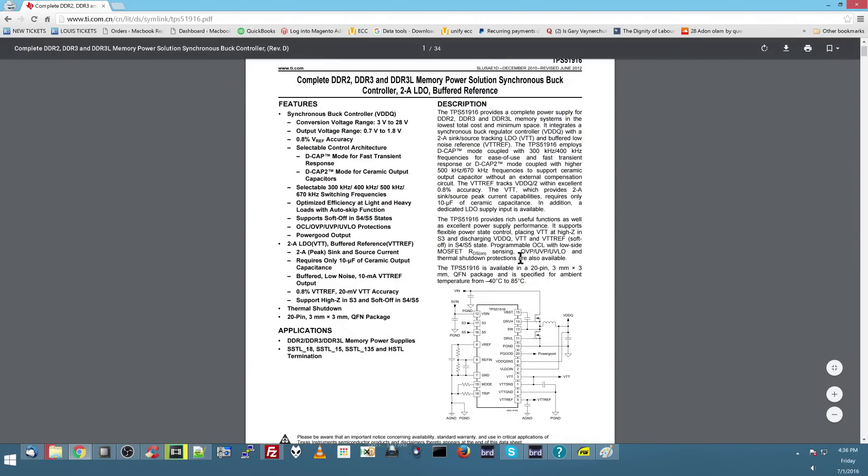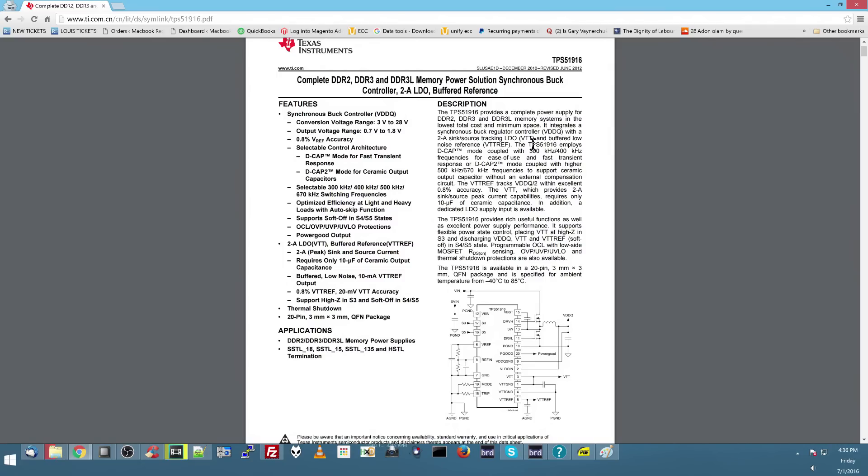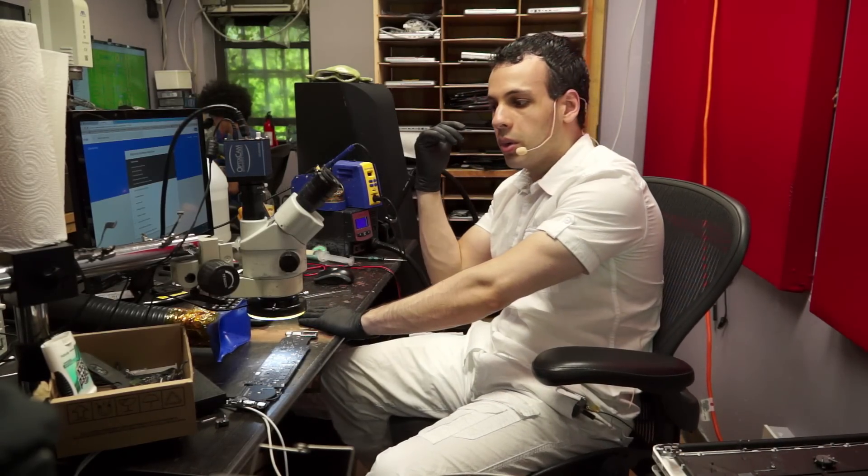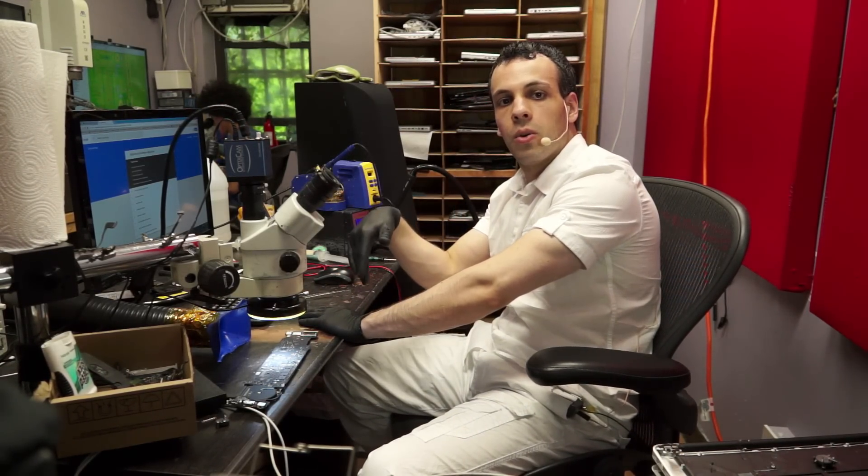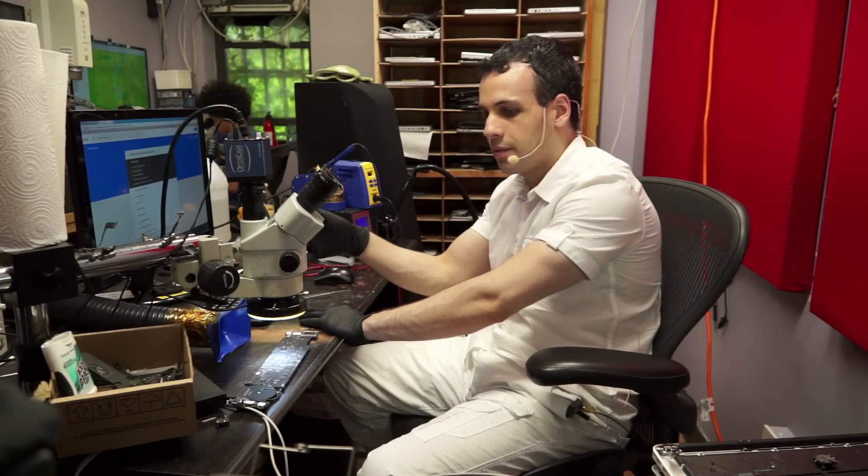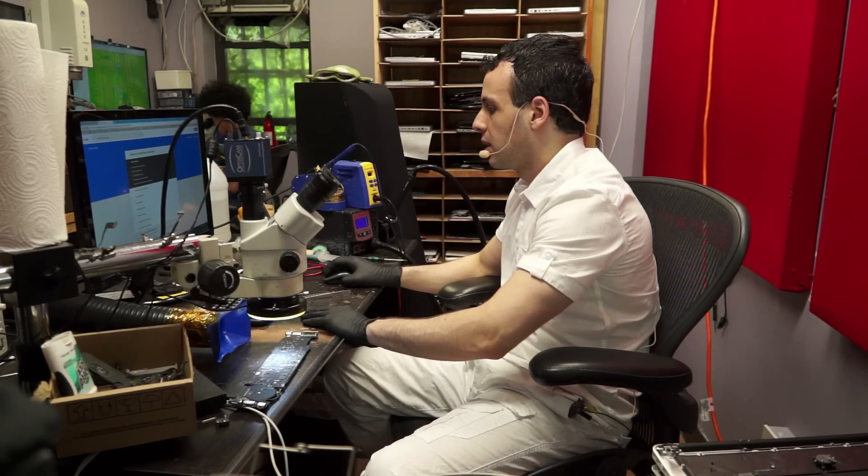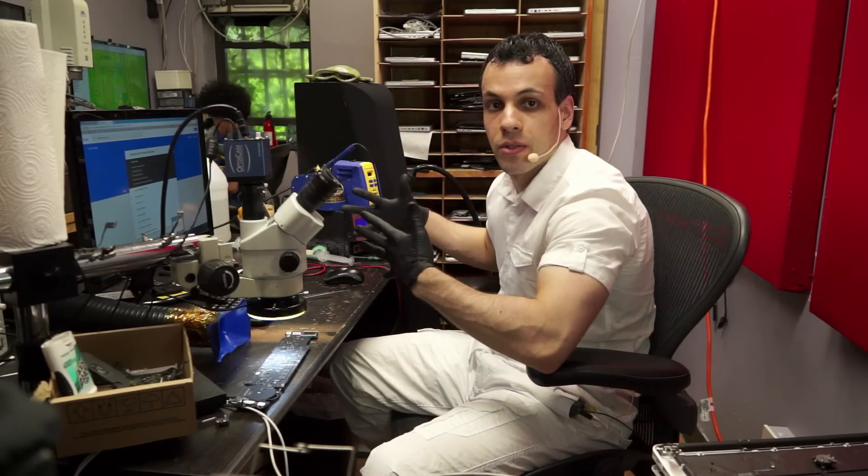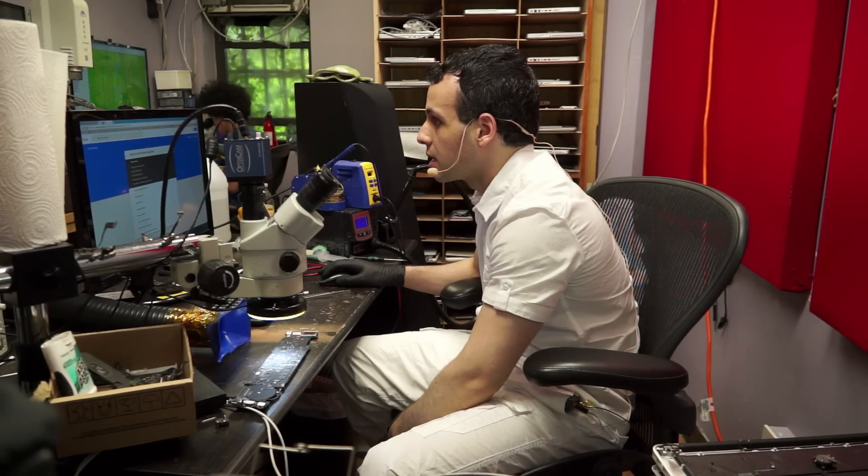So this looks like a buck regulator with an LDO. The whole idea here is a buck regulator is something that's going to take a higher voltage and turn into a lower voltage. And an LDO is something that's going to take a low voltage and turn it into a slightly lower voltage. For example, if you want to turn 12 volts into one, buck converter. If you want to turn like three volts into one and a half, LDO.